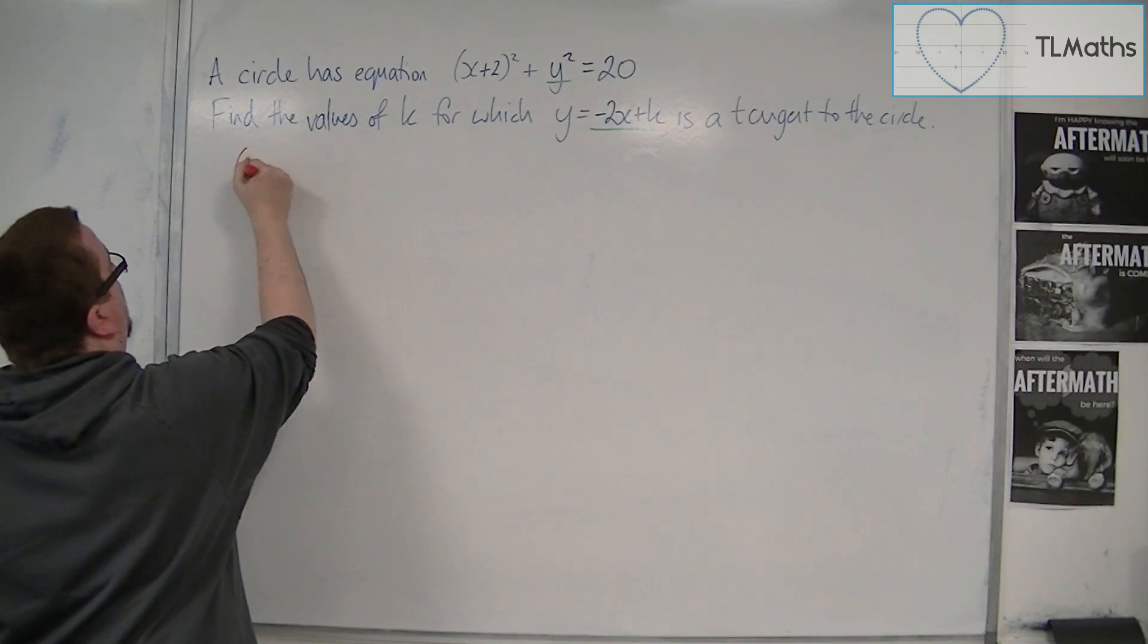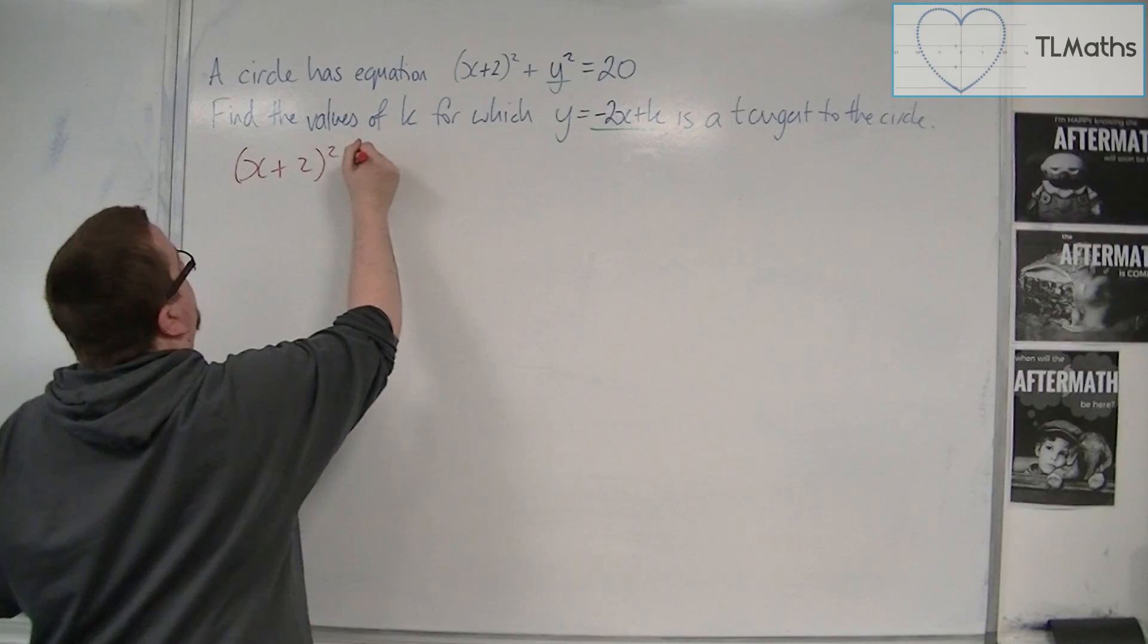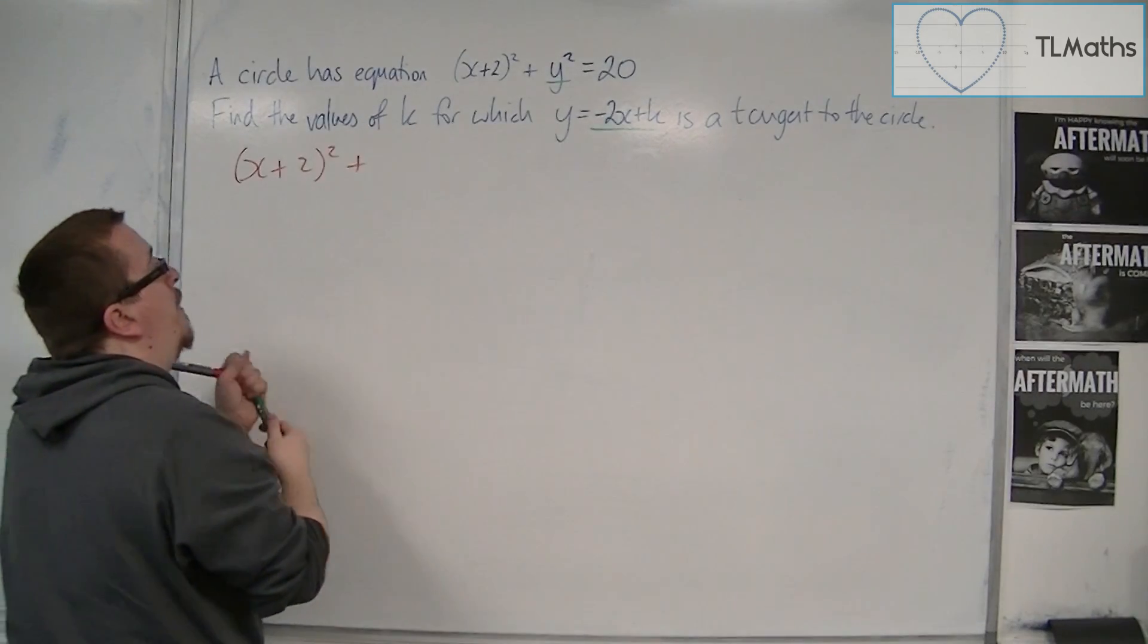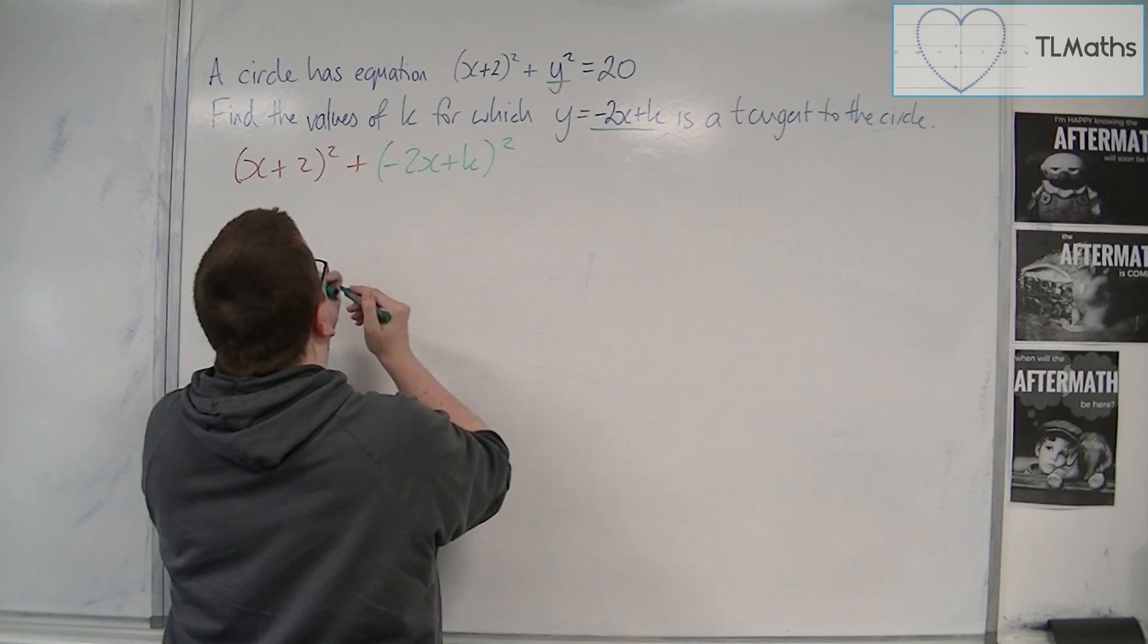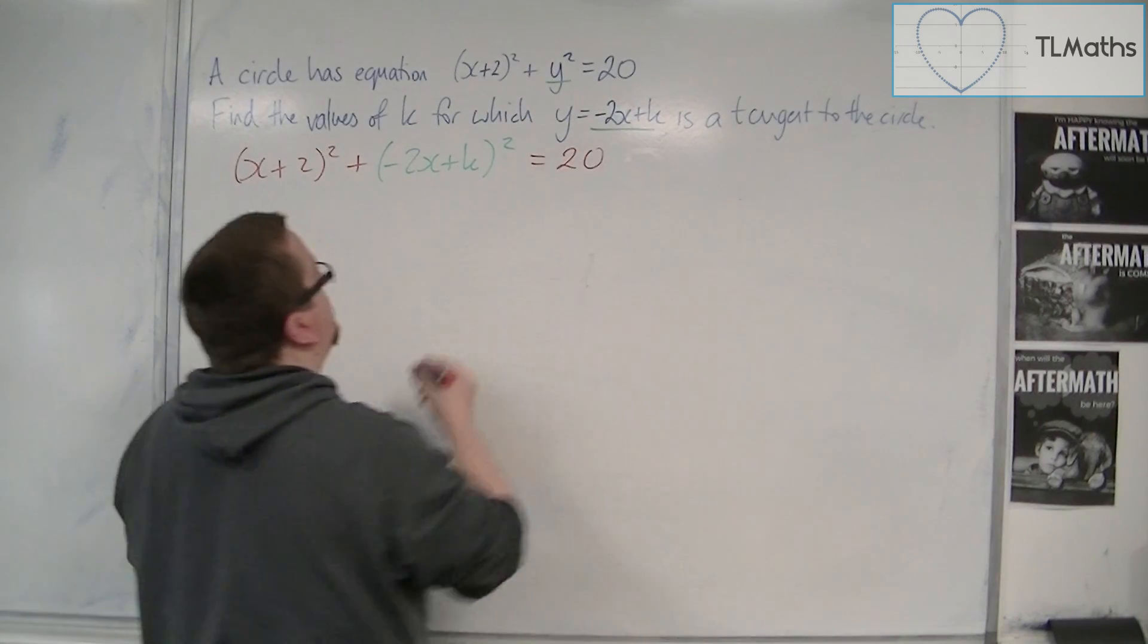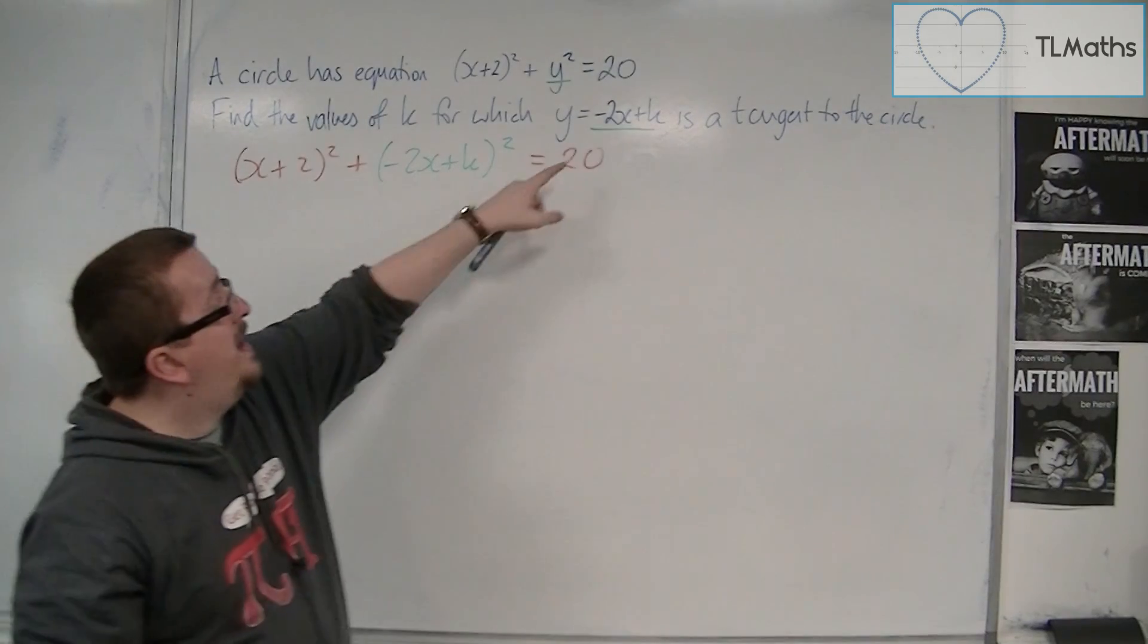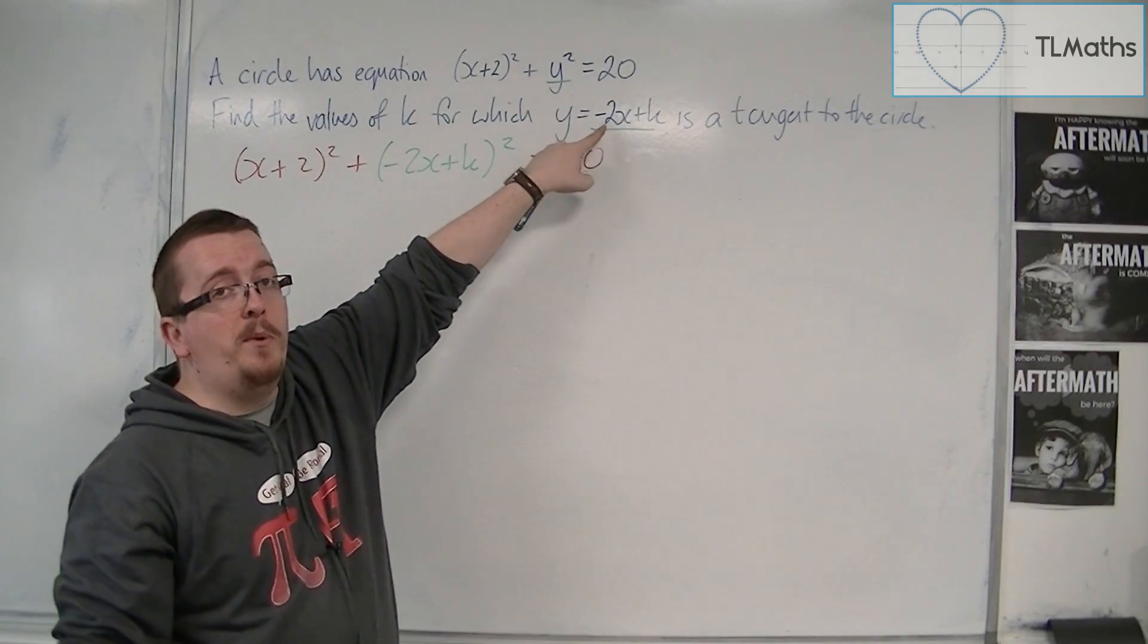Okay, so we're going to have (x+2)² - that stays the same - plus now (-2x + k)² which is going to be equal to 20. Okay, so I've replaced the y with -2x + k.